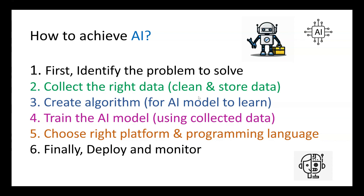The third step is to create an algorithm. Algorithms are mathematical instructions; they tell the computer what to do and how to do it. The fourth step is to train the AI model. Training the AI model means improving the accuracy of your model using the collected data.